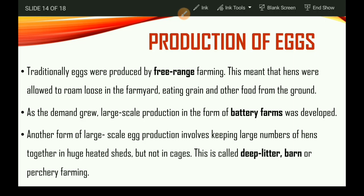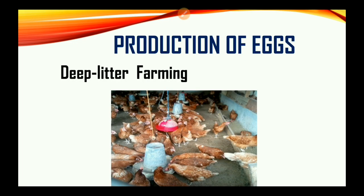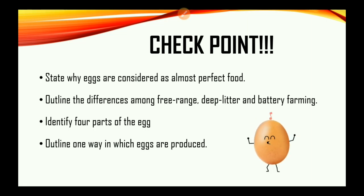As demand grew, large-scale production in the form of battery farms was developed. Another form of large-scale egg production involves keeping large numbers of hens together in huge heated sheds, but not in cages. This is called deep litter, barn, or poultry farming. Looking at pictures of these farming types: the first is free-range farming, where hens roam the yard freely. Then came battery farming, and also deep litter farming.